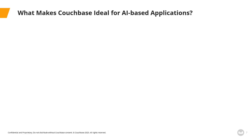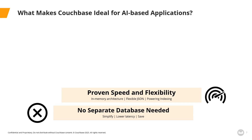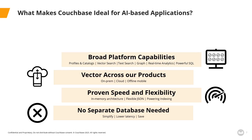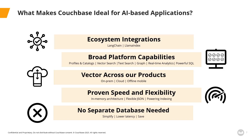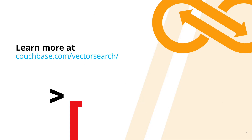So what makes Couchbase an ideal choice for AI-based applications? For Couchbase, vector search is a feature — customers don't need a separate database adding complexity, cost, and query latency. AI-powered applications love speed and JSON, which are both at the heart of Couchbase. We've built vector search across our products, whether on-prem, in the cloud, or even at the edge for offline mobile applications. Broad platform capabilities for hybrid search and Gen AI applications with a rich SQL query language, a single API, and sophisticated indexing. And we've done that with integrations with LangChain and Llama Index. Go to Couchbase.com/vector-search for more information and resources. Thanks for watching.